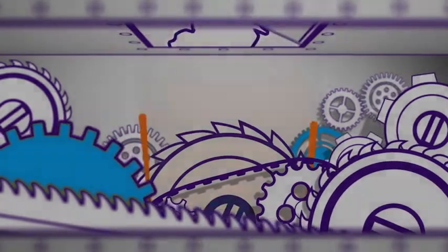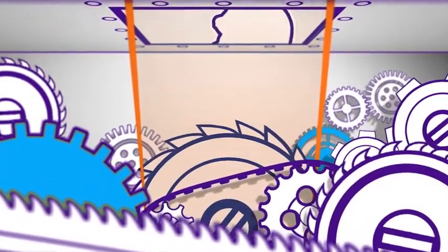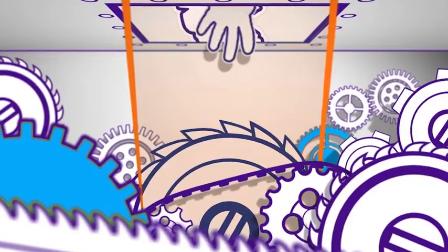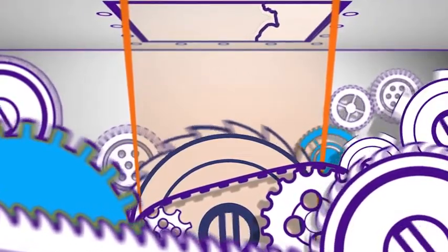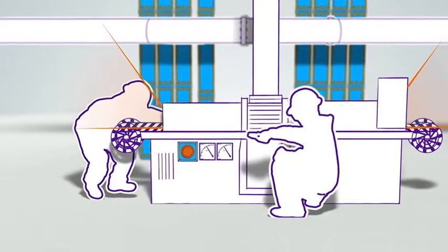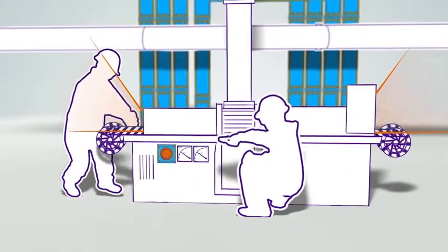When you're maintaining machinery, could any part of it be electrically charged or under pressure that could suddenly be released and harm you? If you're working near machinery that has moving parts, could they catch your clothing?